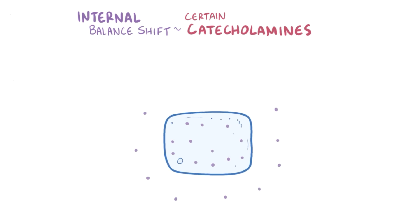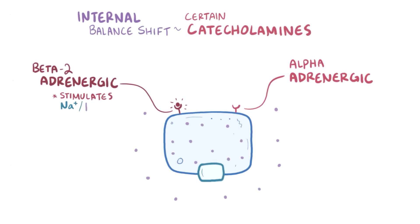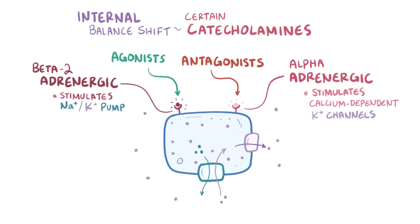Certain catecholamines can also shift potassium out of cells, and this is via beta-2-adrenergic and alpha-adrenergic receptors on cell membranes. When activated, beta-2-adrenergic receptors stimulate the sodium-potassium pump, which pulls potassium from the blood into cells. Meanwhile, alpha-adrenergic receptors cause a shift of potassium out of cells via calcium-dependent potassium channels. So that being said, beta-2-adrenergic agonists and alpha-adrenergic antagonists both cause a shift of potassium into cells and out of the blood.